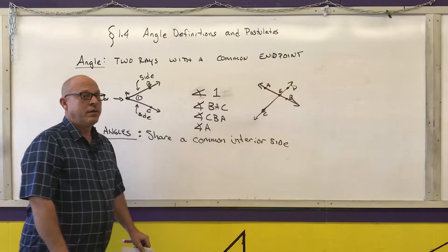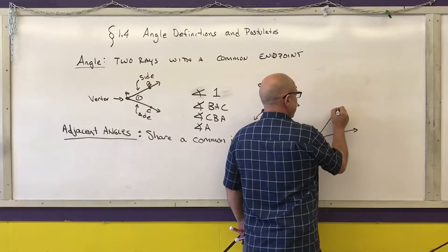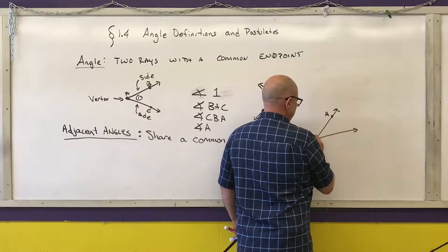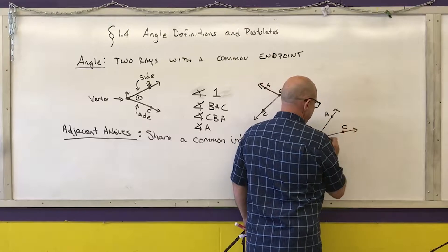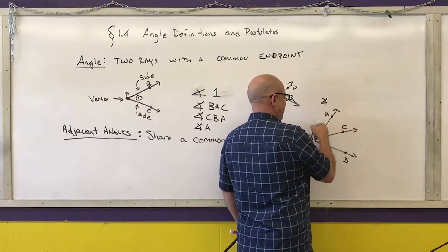So what I'm going to do is show you, we're going to call it A, B, C, D. Angle ABC and angle CBD are adjacent.